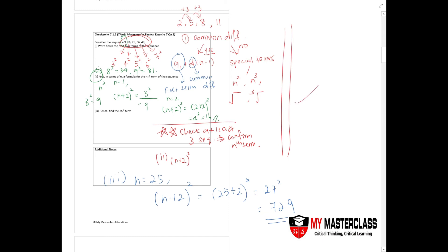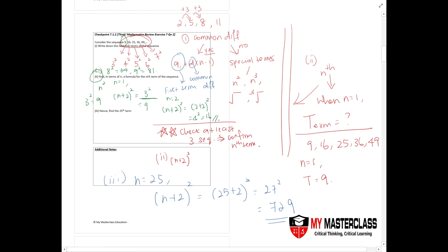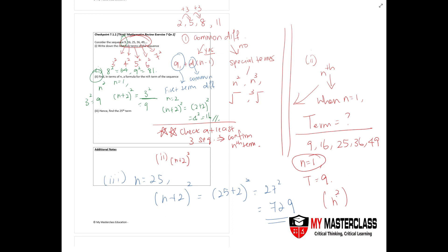An important point about nth term formulas: always remember that the nth term, when n equals 1, must give you the first term of the sequence. In this case, when n equals 1, the term is 9. A common mistake is to jump straight to n squared as the nth term without checking. Always check, and make sure you understand what the nth term actually means.